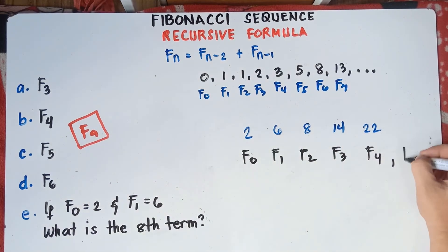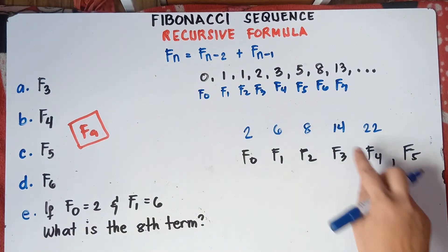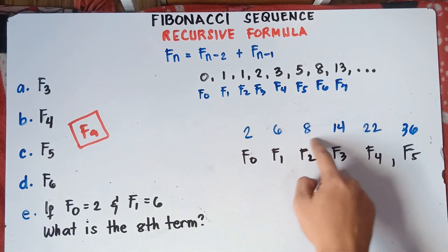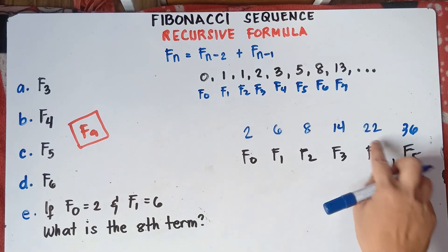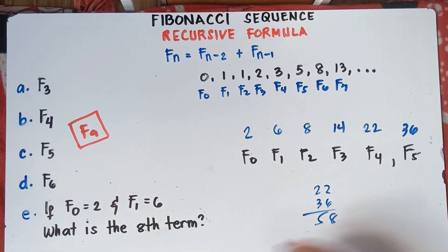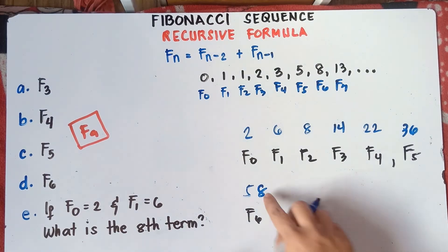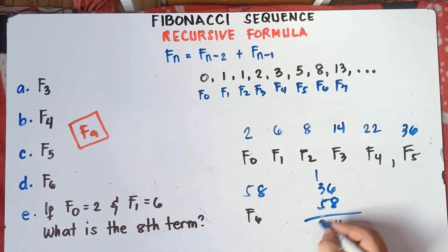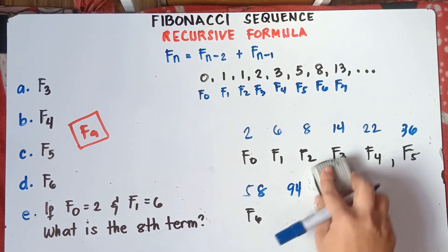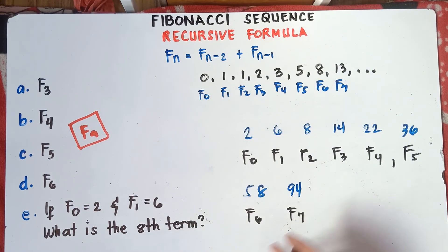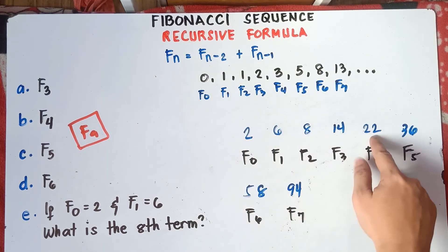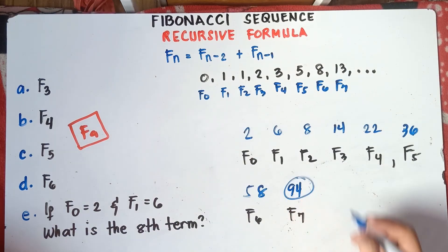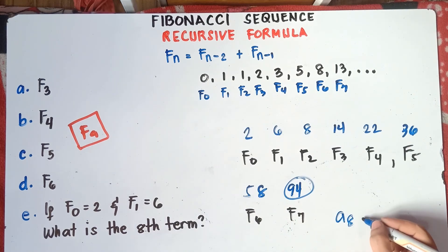The 5th term is 22. For the 6th term, F sub 5: 14 plus 22 equals 36. For the 7th term: 22 plus 36 equals 58. For the 8th term: 36 plus 58 equals 94. Checking the count — 1, 2, 3, 4, 5, 6, 7, 8 — the 8th term is 94. Therefore, the answer is 94. We can write this as A sub 8 equals 94.